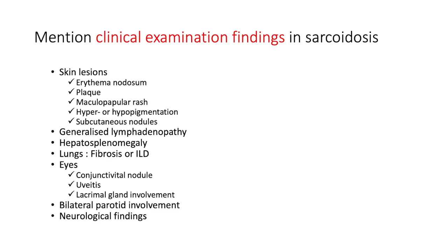Clinical examination findings in sarcoidosis: it is multi-systemic and granulomatous. Starting with the skin, there are many integumentary changes — notably erythema nodosum, plaques on the skin, and a maculopapular rash.